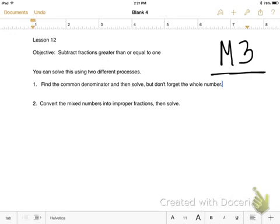First, you could just find the common denominator and then solve it, but be careful you don't forget the whole number. The tricky thing with this process is many times you're going to have to borrow. Your other option would be to convert the mixed number into an improper fraction and then solve, which is typically what I like to do, although you'll have big numbers. So let's try a couple together.